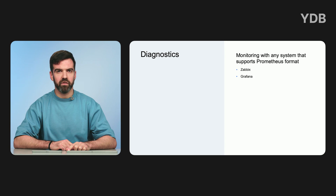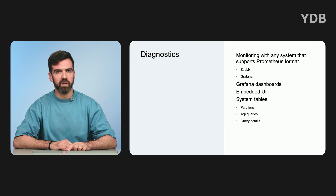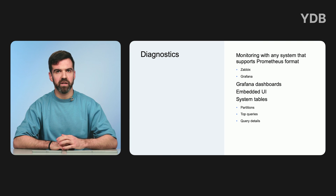YDB has multiple system health sensors. YDB sensor values are available in Prometheus format, so you can collect metric values using Prometheus, a popular open source tool. To visualize data, you can use any system that supports Prometheus, such as Zabbix, Grafana, etc. Grafana dashboards for YDB are already published in the YDB repo on GitHub. To enable internal introspection of the database state, the user can make queries to special service tables called system views, which provide detailed information about individual partitions of all DB tables and about user queries.